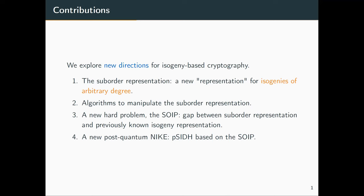We introduce a new hard problem called the SOIP, for suborder to ideal problem. This problem basically realizes the gap between the suborder representation and previously known isogeny representations. The hardness of this problem implies that this suborder representation is not equivalent to, in particular, the ideal representation that we can derive naturally from the Deuring correspondence for isogenies.